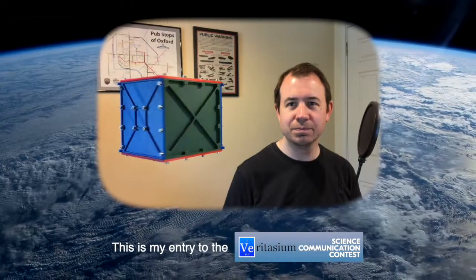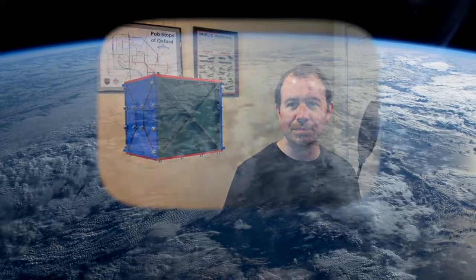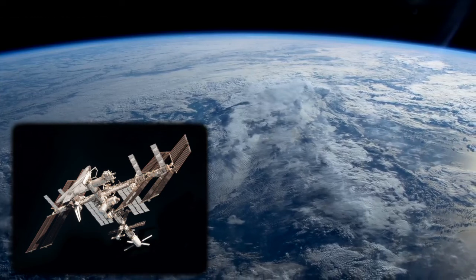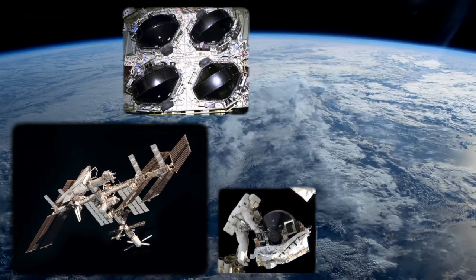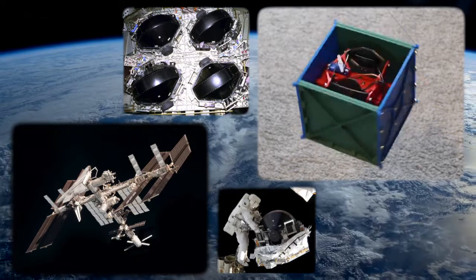How do you rotate a spacecraft when there's nothing to push against in space? Big spacecraft, like space stations, use something called control moment gyroscopes. Can I explain them in 60 seconds? Let's see!